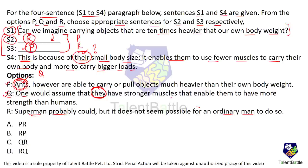It cannot be P and R, because after talking about human body weight, we can't talk about ants, then switch back to humans, then switch back to ants again. If we talk about Superman or humans, the word 'there' in S4 would refer to humans, but it actually refers to ants. So P must come immediately before S4, and R must come above it. The correct option is option B: R and P.